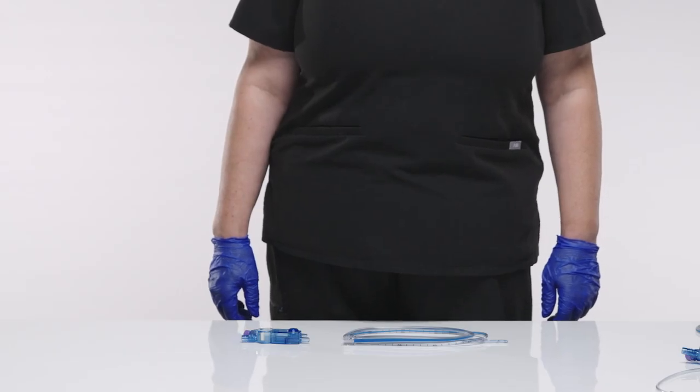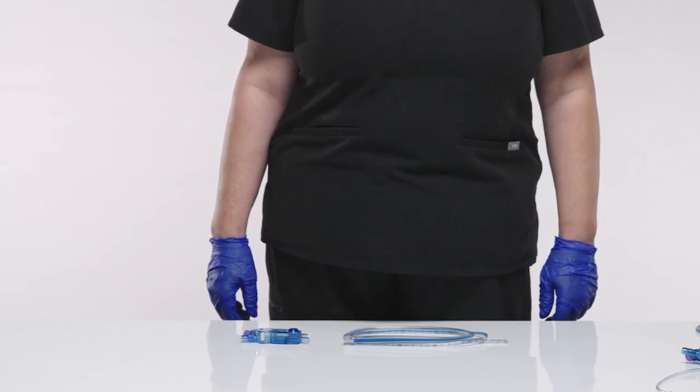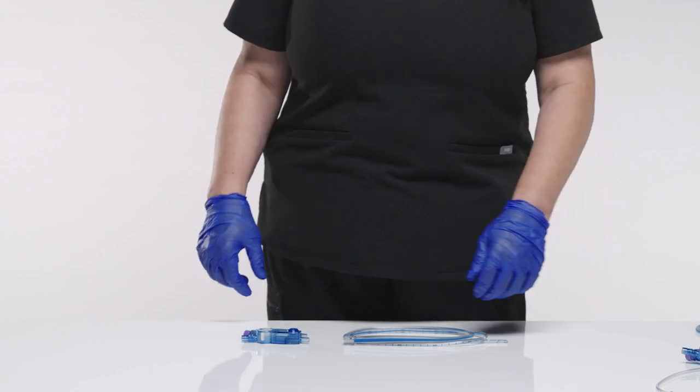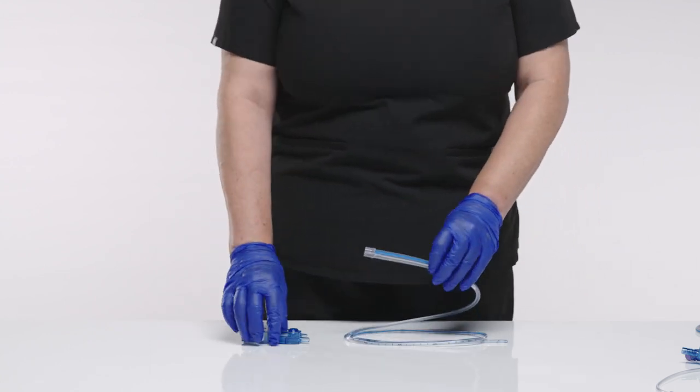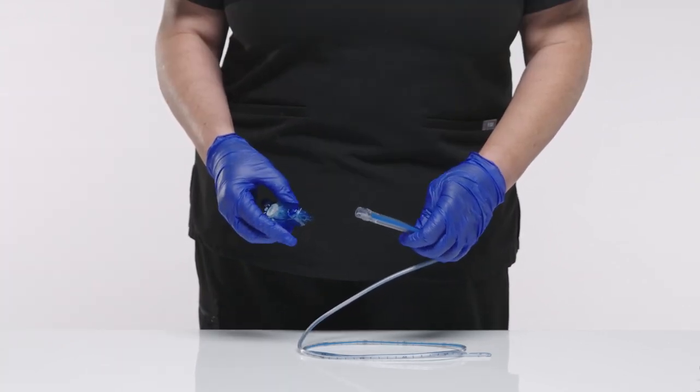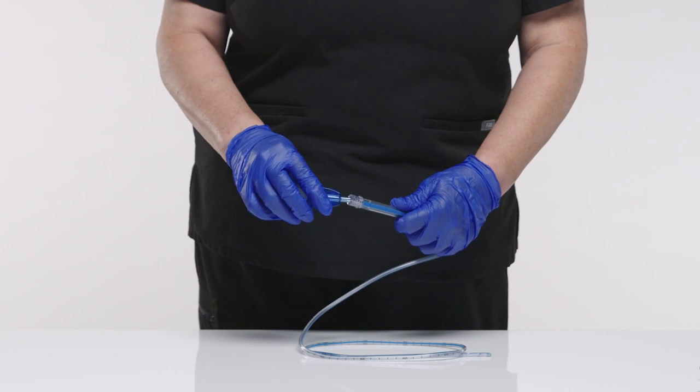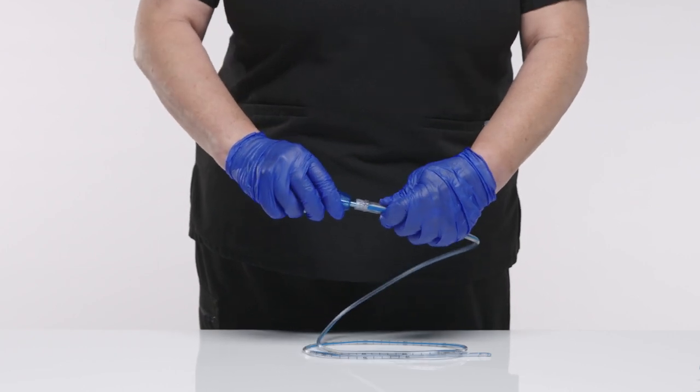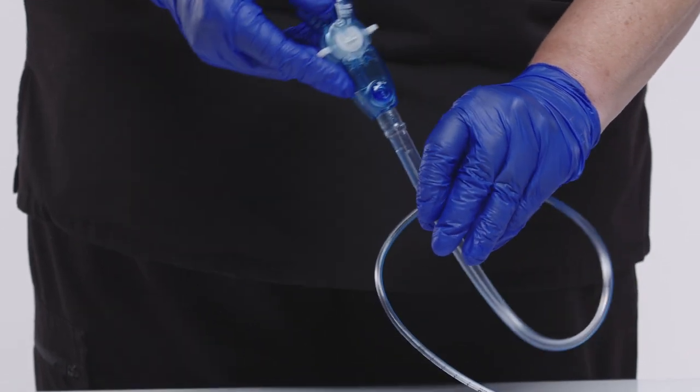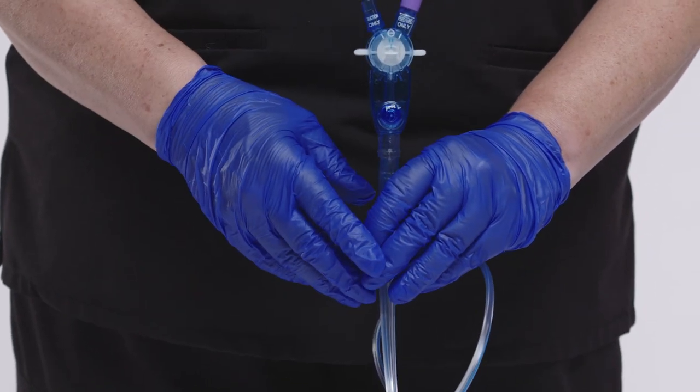The Kangaroo Salem Sump with Multifunctional Port with EnFit Connection will either come individually or with a Salem Sump. In both instances, the clinician will need to assemble the product. Insert the larger diameter post into the larger diameter hole of the suction lumen on the sump tube. The part is properly attached to the tubing when the face of the port is flush with the end of the tube.